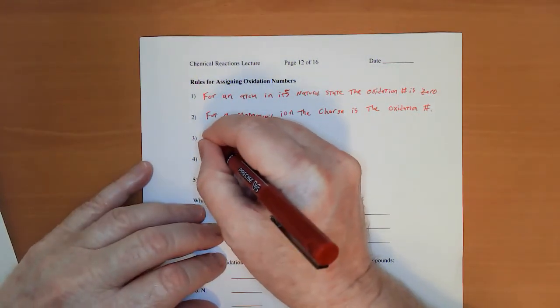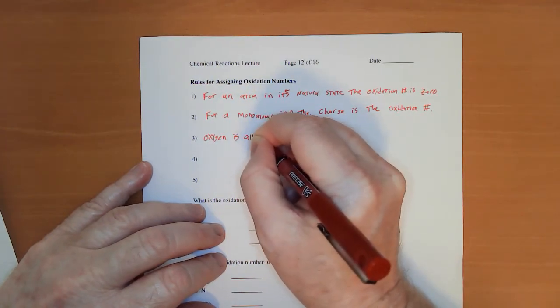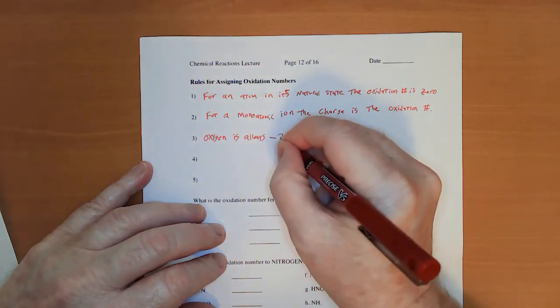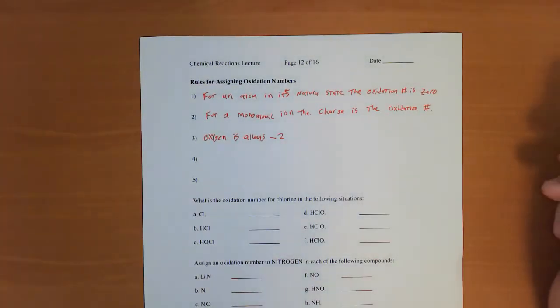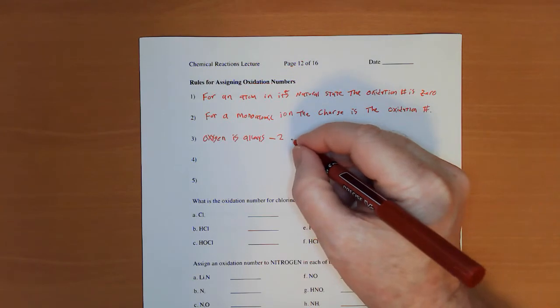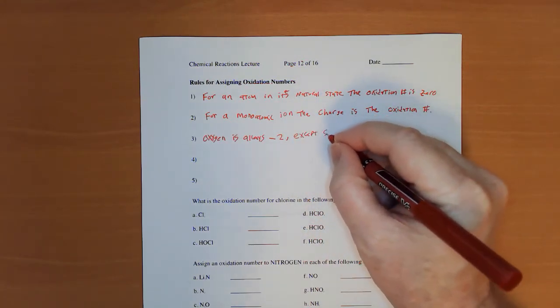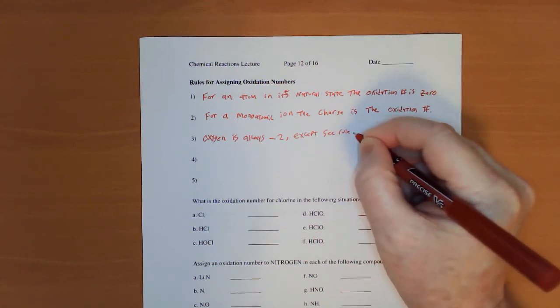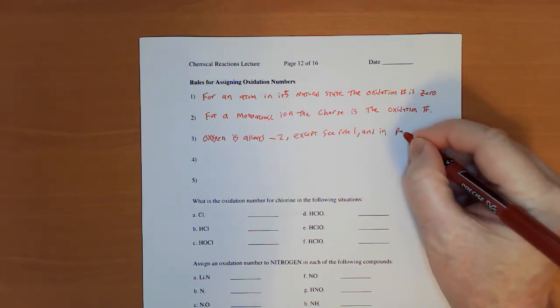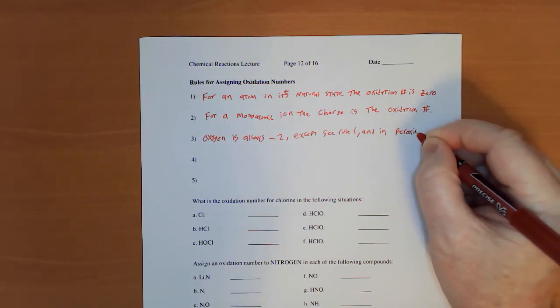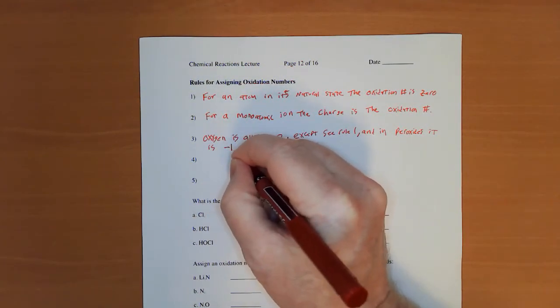Third rule. Oxygen is always negative two. Now anytime you see something like that, you know there's going to be some exceptions coming your way. Oxygen always negative two, except see rule one, and in peroxides it is negative one.